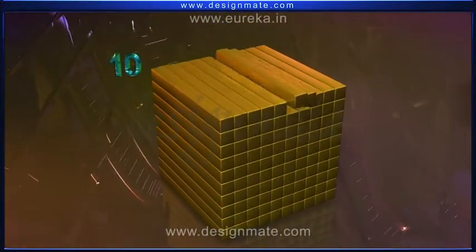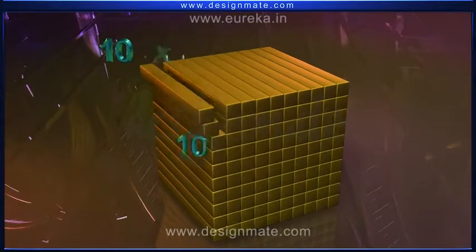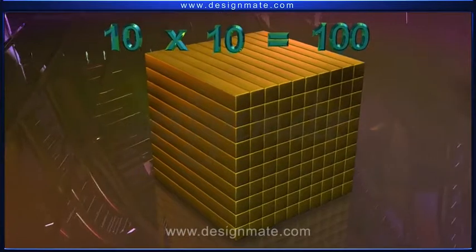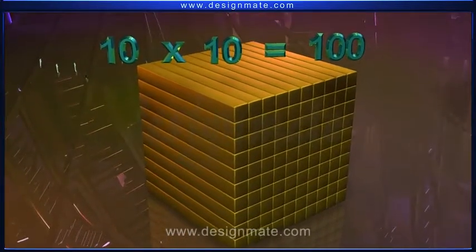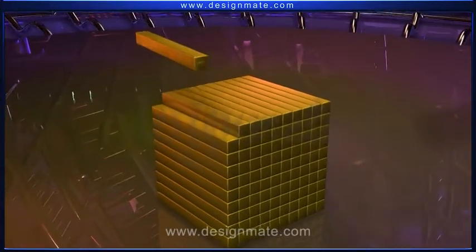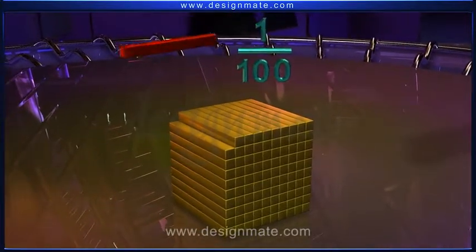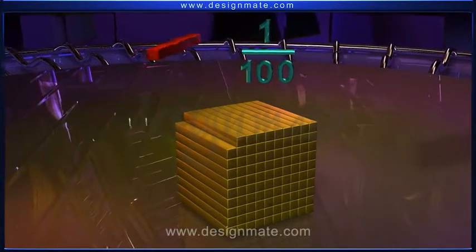Ten horizontal cuboids are multiplied with ten vertical cuboids. That is, one hundred cuboids of the same size are obtained. Then, each small cuboid of the whole cube represents one upon hundred, or one hundredth of the whole cube.